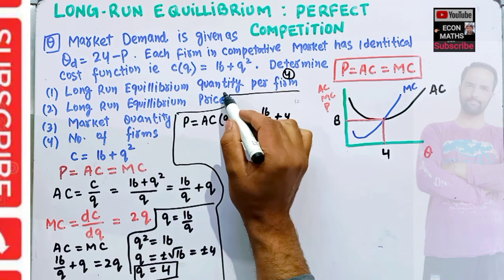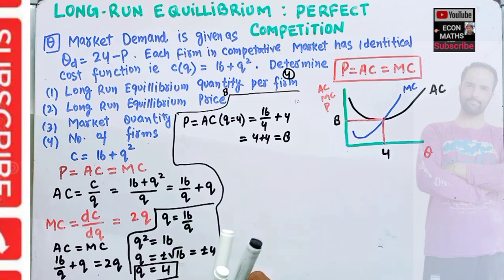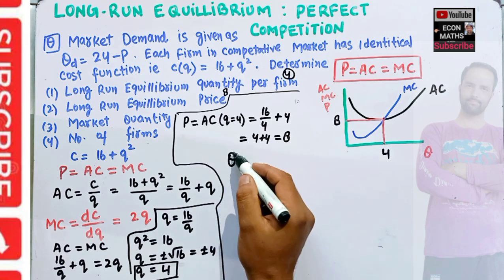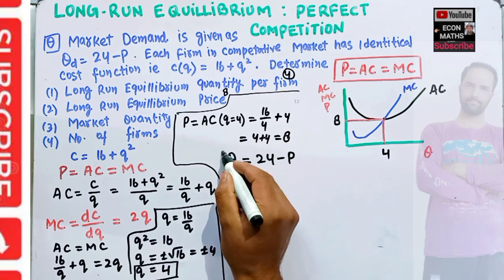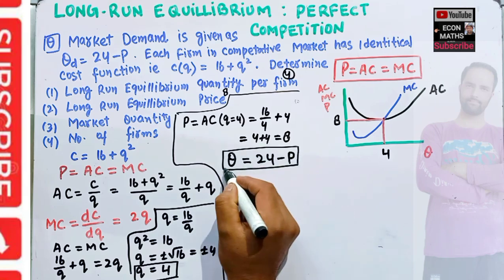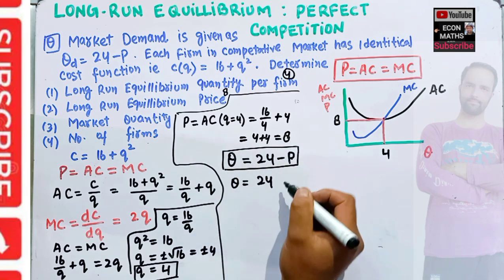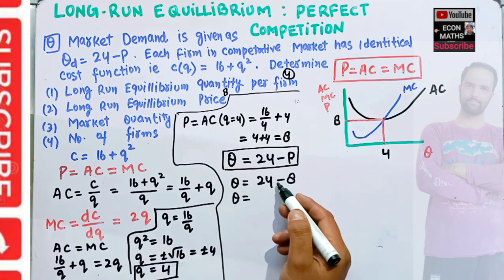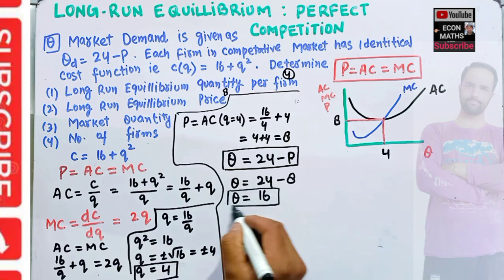Now we find the market quantity. The market quantity, denoted by capital Q, equals QD = 24 minus P. Substituting P = 8: market quantity = 24 minus 8 = 16. So the total market quantity is 16.